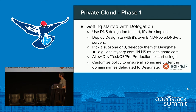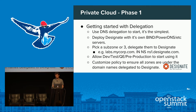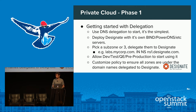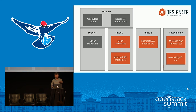Phase one: you've got your cloud and Designate control plane up, but you don't want to touch existing infrastructure. Stand up Bind or PowerDNS at the side, then take subzones like labs.mycompany.com and delegate them over. Your cloud users can then start creating myproject.labs.company.com. This lets you build trust — non-critical workloads are using it, you haven't touched existing infrastructure, and users start getting used to it. Customize Designate policy to ensure all zones stay under labs.mycompany.com.